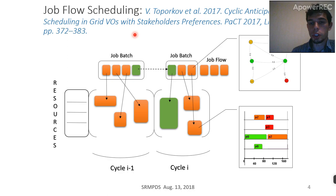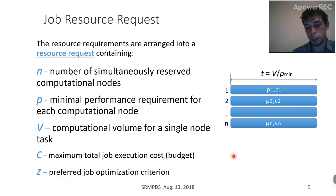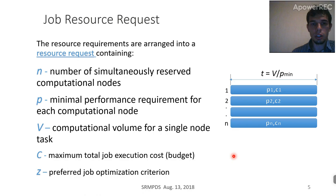Each user job may have a complex structure, which can be represented with a computational graph. Here we have some examples of how this graph is executed on a set of simultaneously available and allocated resources. The question now is how, in the first place, these resources should be allocated for each job. Each job has a resource request, which is a set of specifications of what resources and what quantity are required to execute this job.